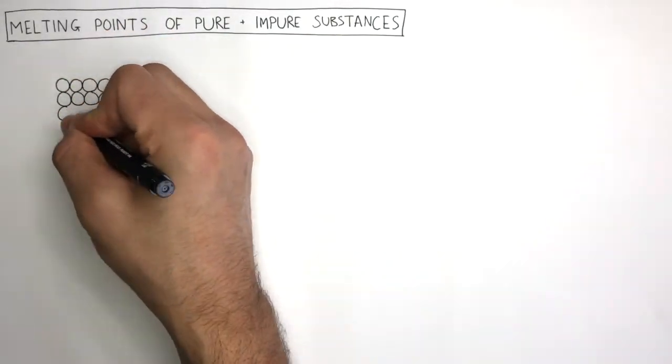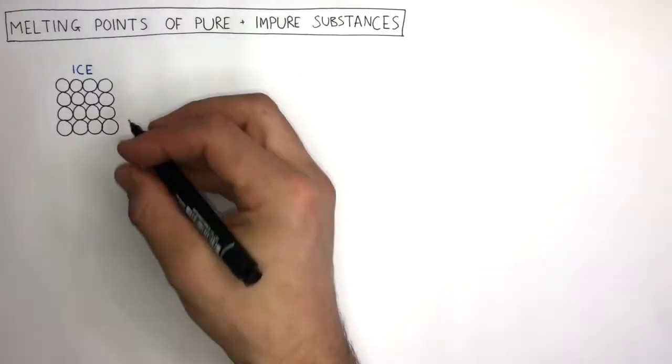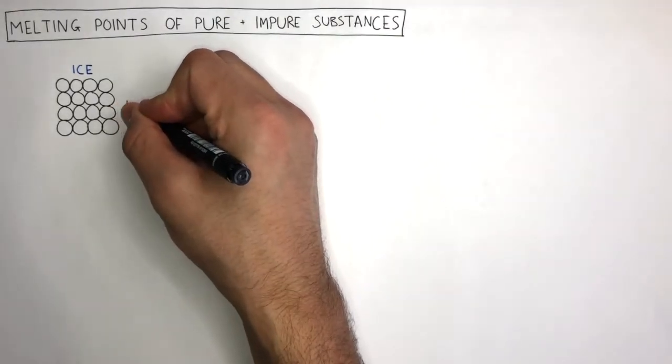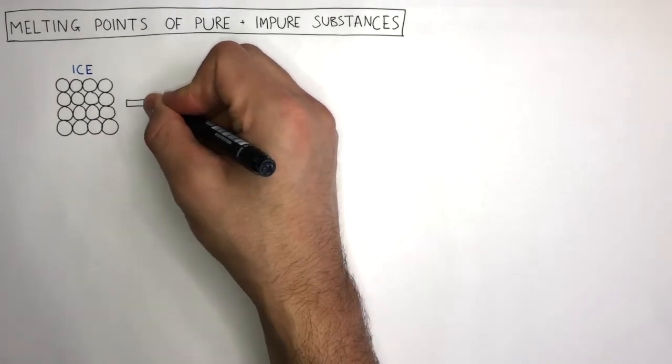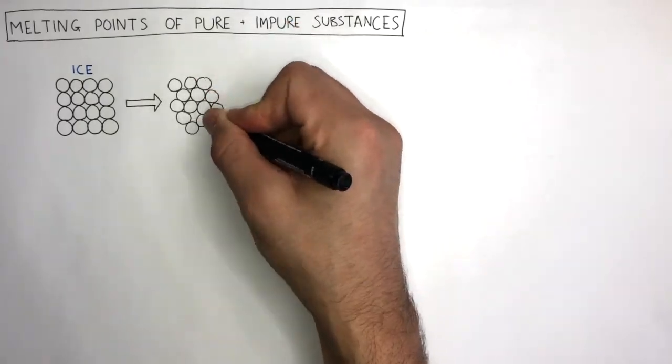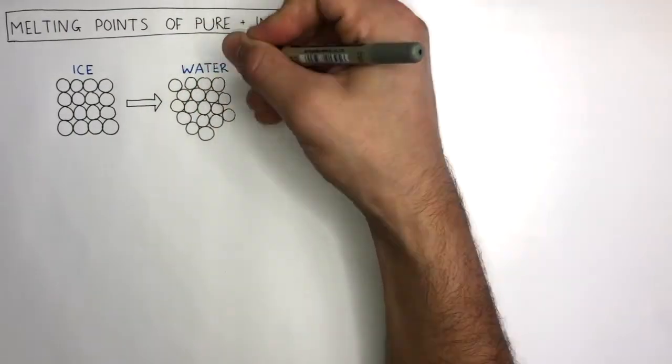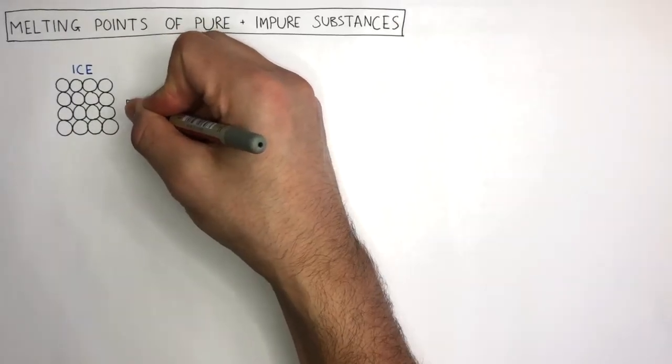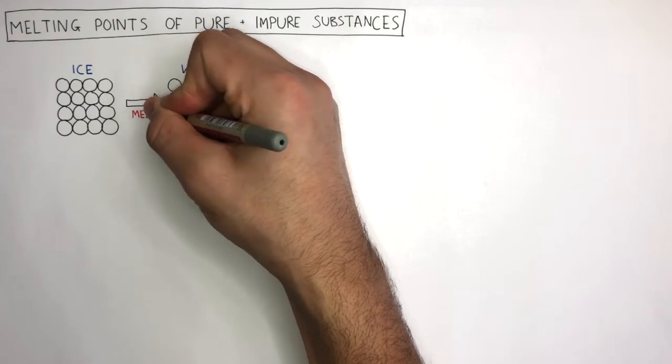This particle diagram represents ice. These water molecules are regularly arranged, touching, and they vibrate in a fixed position. This particle diagram represents liquid water. For solid ice to become liquid water, melting takes place.